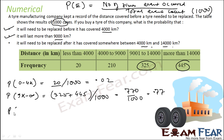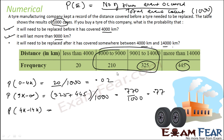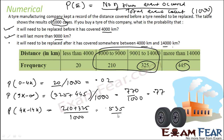Then the third one: the probability that it will be replaced somewhere between 4,000 to 14,000 kilometres. So for the 4 to 14 range, the total number of events is 210 plus 325 by total event count. This becomes 535 by 1,000, and that is 0.535.